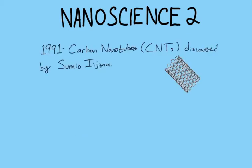In 1991, this guy named Sumio Iijima didn't come up with carbon nanotubes — he discovered them. These are really important; you can do all kinds of stuff like heat dissipation and tensile strength with them, and I'll get into that later. But they're really cool and really important.